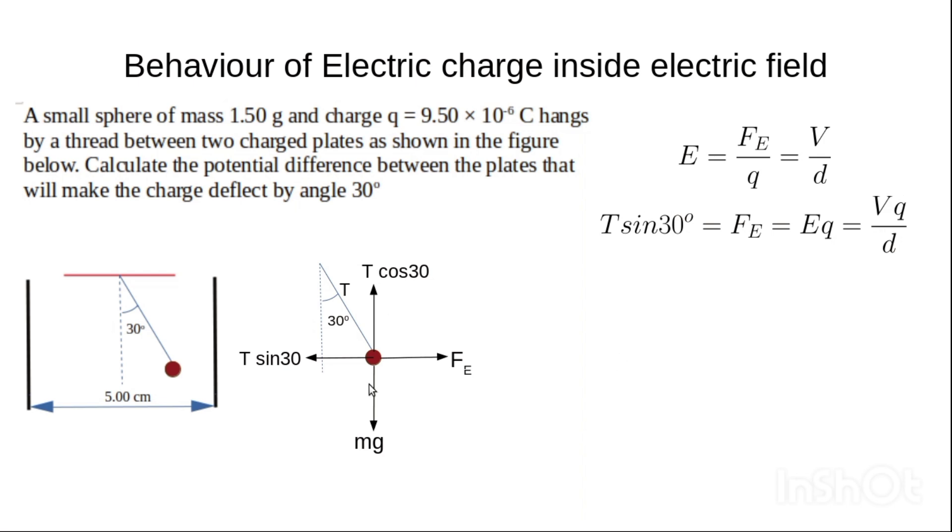The forces along the vertical will be T cos 30 = mg. This must be equal to this.